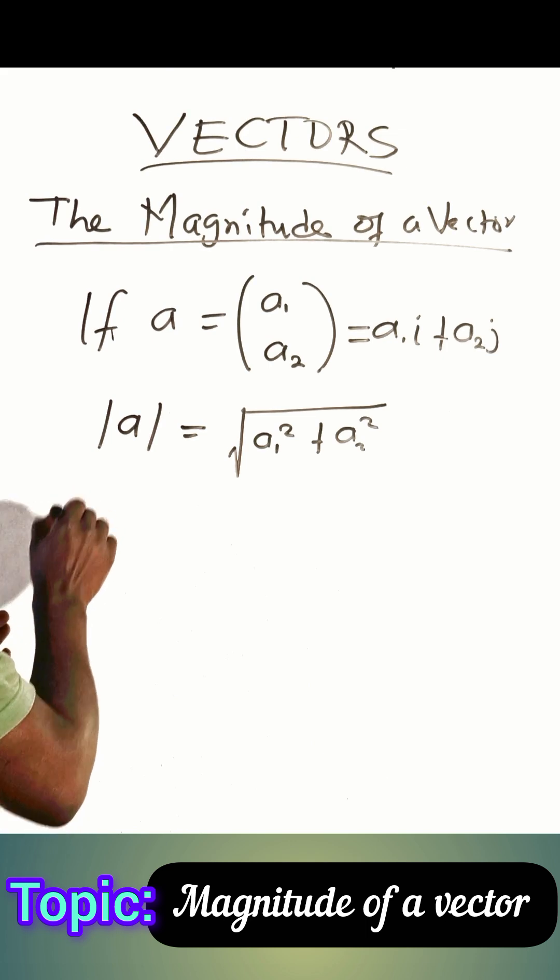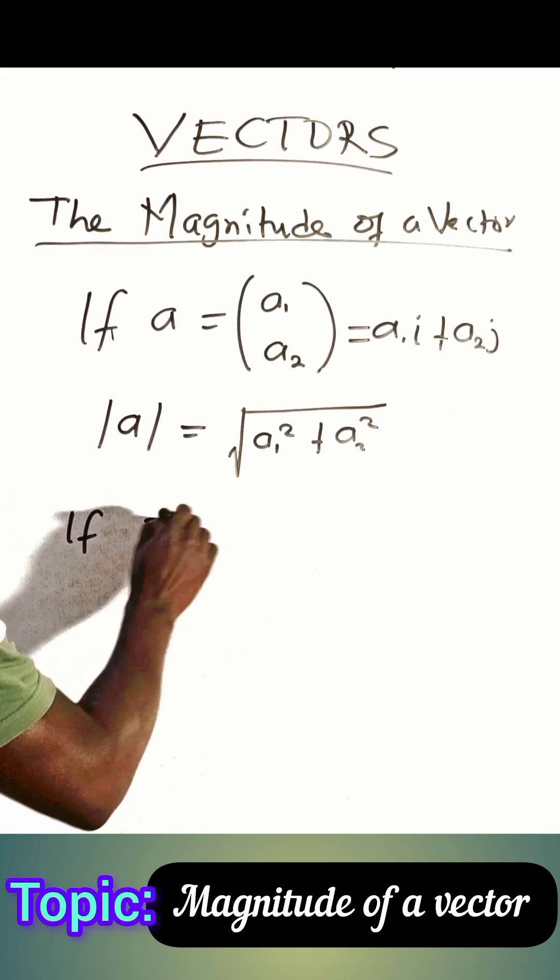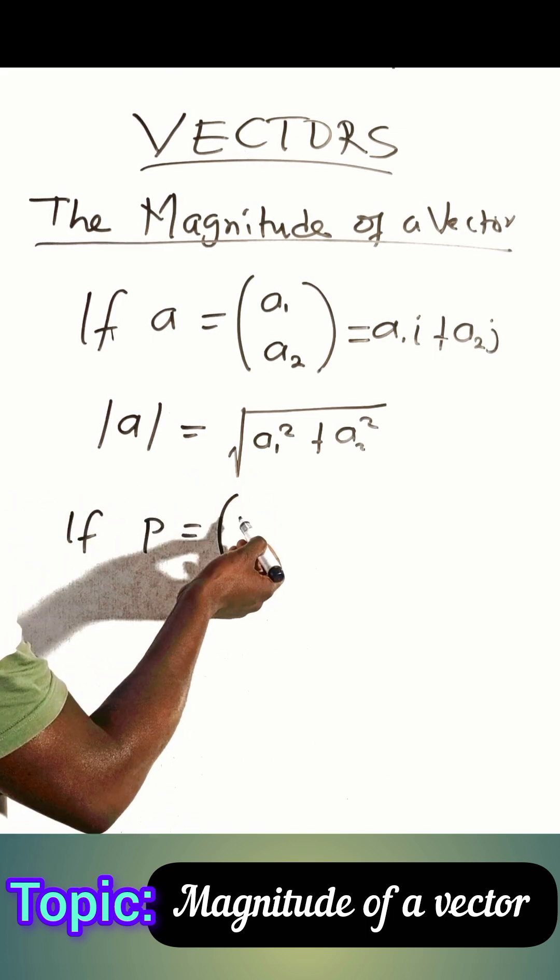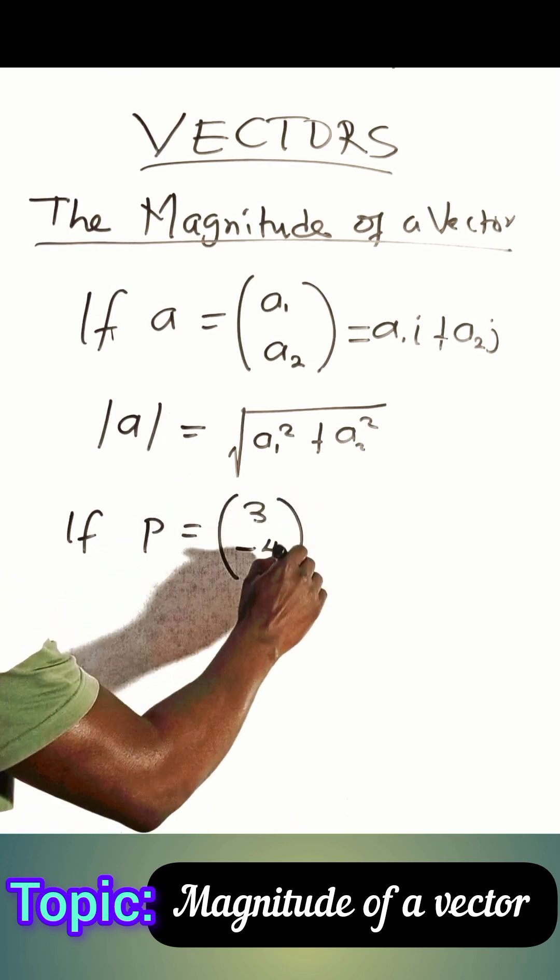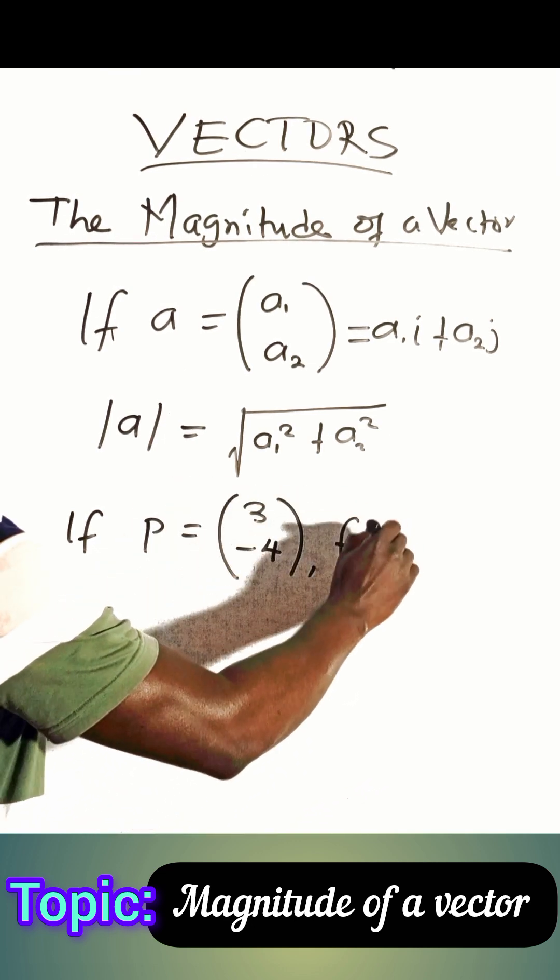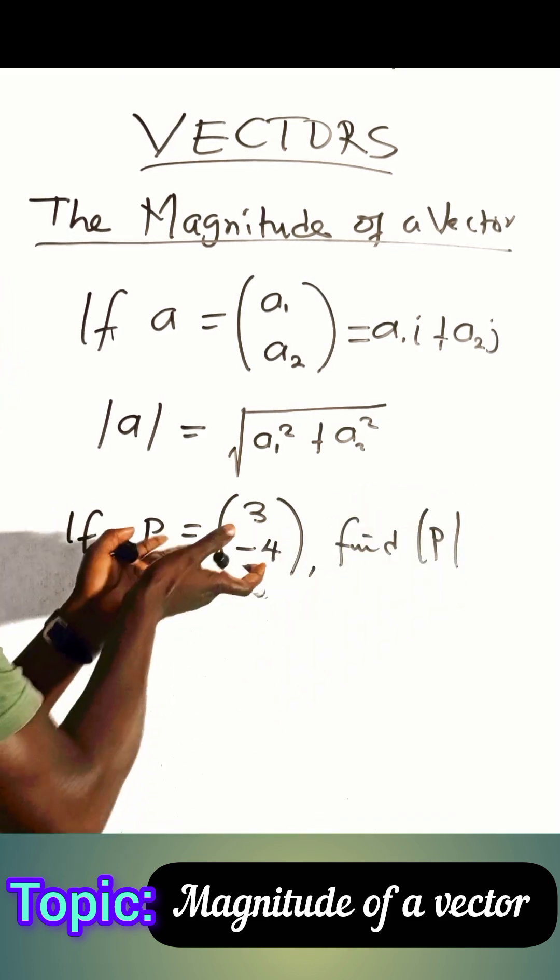If I have an example, if P is a vector and the x component is 3 while the y component is minus 4, and we have to find the magnitude of P, how do we find the size of this vector?